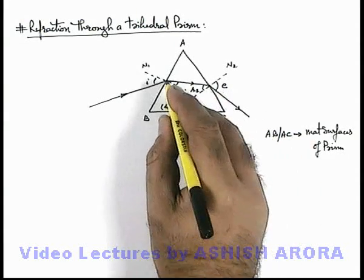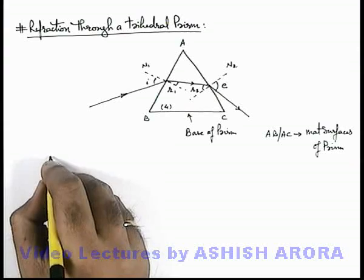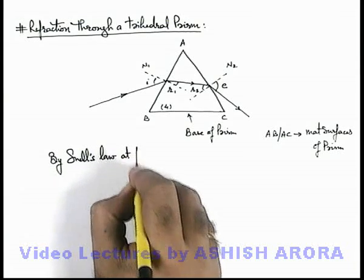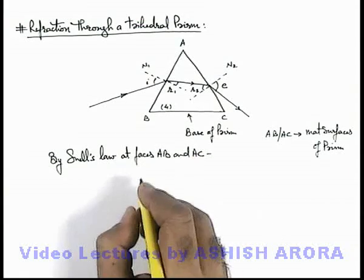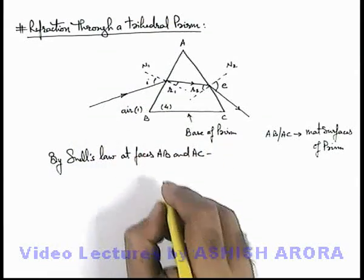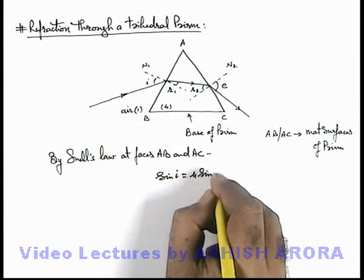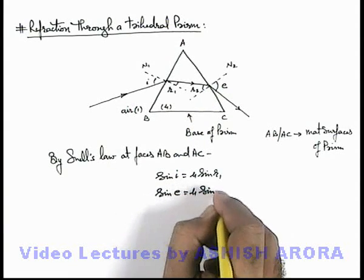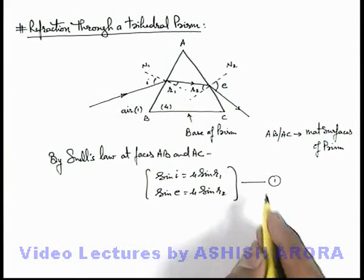At both points where refraction is taking place, we can use Snell's Law at faces AB and AC. At face AB, the outside medium is air which has refractive index 1, so we can write: 1 × sin(i) = mu × sin(r1). And on the other face we can write: sin(e) = mu × sin(r2). This is an important relation for prism analysis — we name it as Equation 1.